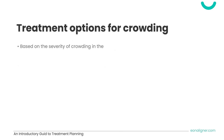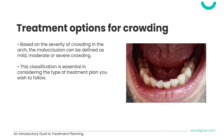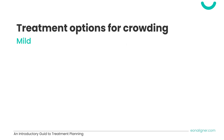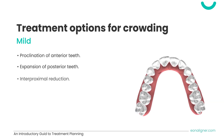Moving on to treatment planning for crowding cases. Crowding can be classified as mild, moderate, and severe, and determining the classification is essential in selecting treatment options. In mild crowding cases, the options available to provide space for crowded teeth are proclination of anterior teeth, expansion of the arch or arches posteriorly, introducing interproximal reduction to provide the needed space, or a combination of all.